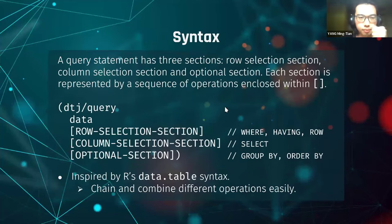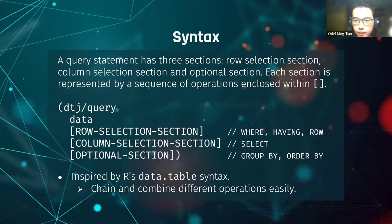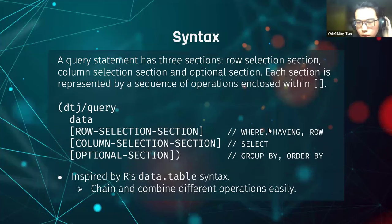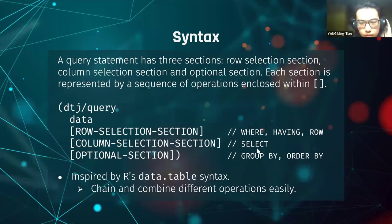Here is the syntax. In DataJure, query statements have three sections: a row section, a column section, and an optional section. Each section is represented by a sequence of operations enclosed within a pair of square brackets. The row selection section corresponds to WHERE, HAVING, and the row operation. The column section corresponds to SELECT. The optional section corresponds to GROUP BY and ORDER BY. This syntax is inspired by data.table syntax from R, which makes it easy to chain and combine different operations.